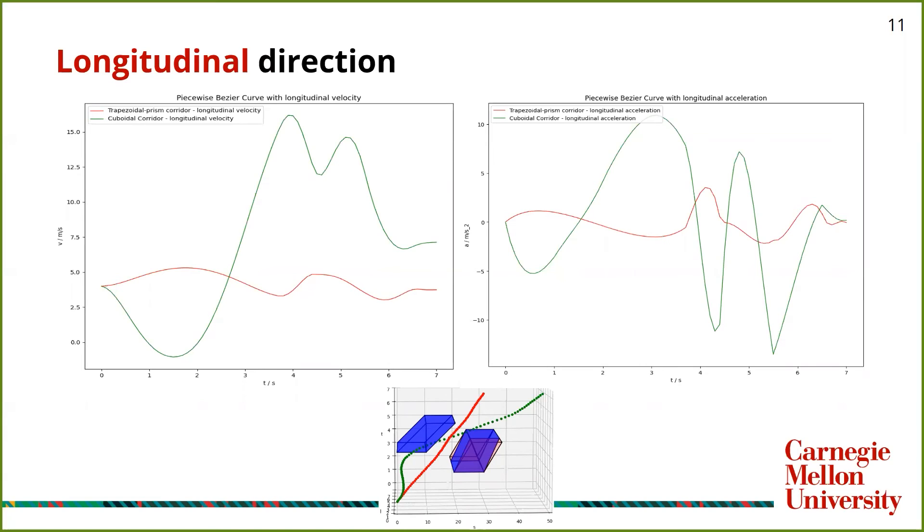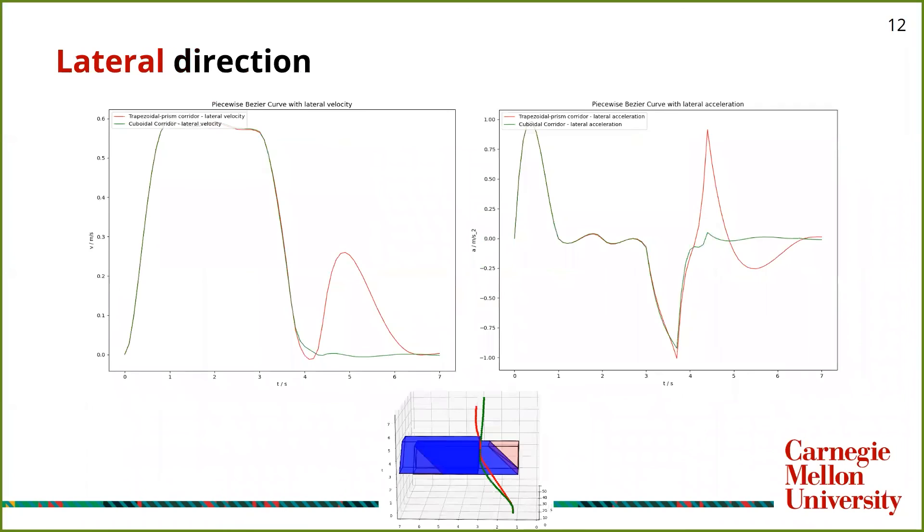In the lateral direction, we observe a peak between 4 and 6 seconds in the lateral velocity plot. This means that the car is trying to avoid the static obstacle and change its lane.